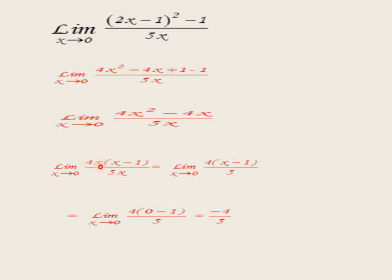Another example: limit as x approaches 1 of (x² minus 4x plus 3) over (x² minus 1). By substitution the result is 0 over 0, an unspecified quantity. We then use factorization.